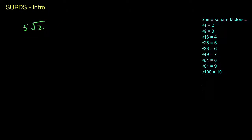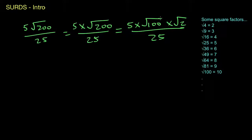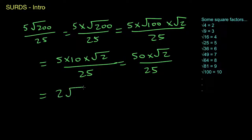Finally, try 5√200 over 25. We have 5 times the square root of 200 over 25. Breaking the square root of 200 into square factors: the square root of 100 times the square root of 2. The square root of 100 is 10, so we get 5 times 10 times √2 all over 25, which is 50√2 over 25. Since 25 goes into 50 twice, the final answer is 2√2.